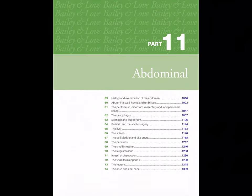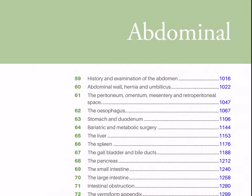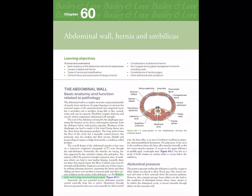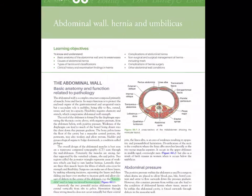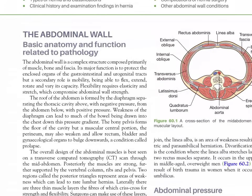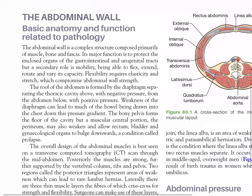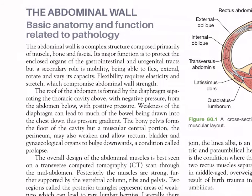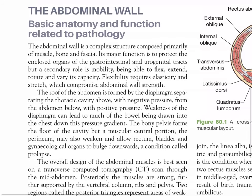In part 11, abdominal, we start with chapter 60: abdominal wall hernia and umbilicus. The abdominal wall is a complex structure composed primarily of muscle, bone, and fascia. Its major function is to protect the enclosed organs of the gastrointestinal and urogenital tracts, but a secondary role is mobility — being able to flex, extend, rotate, and vary its capacity.